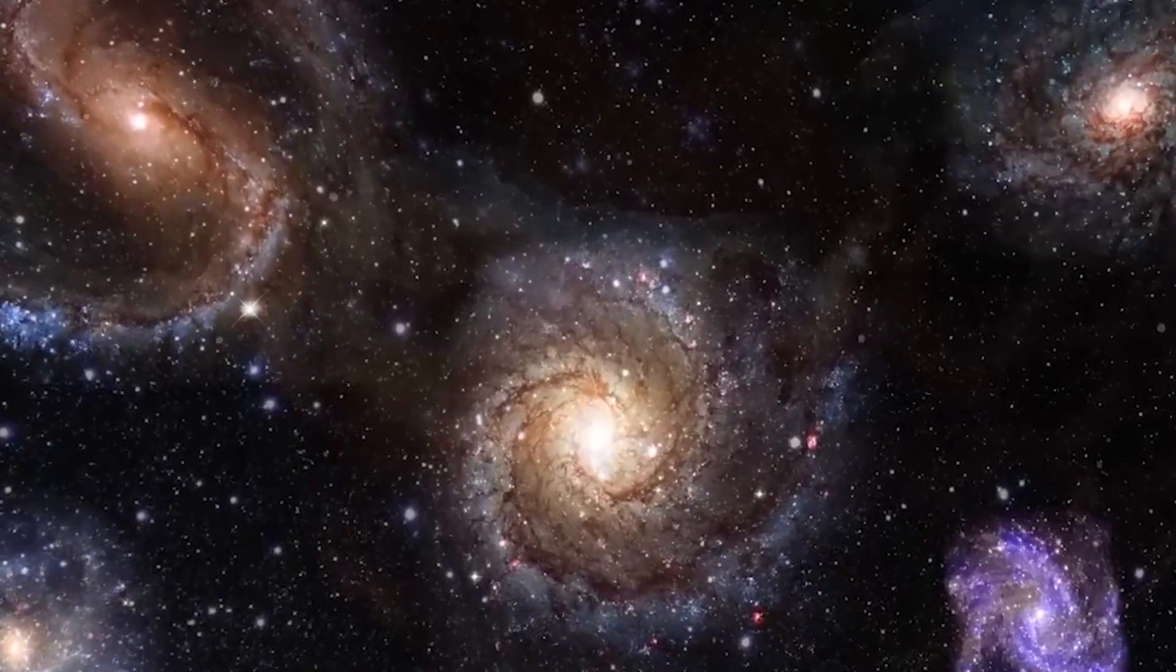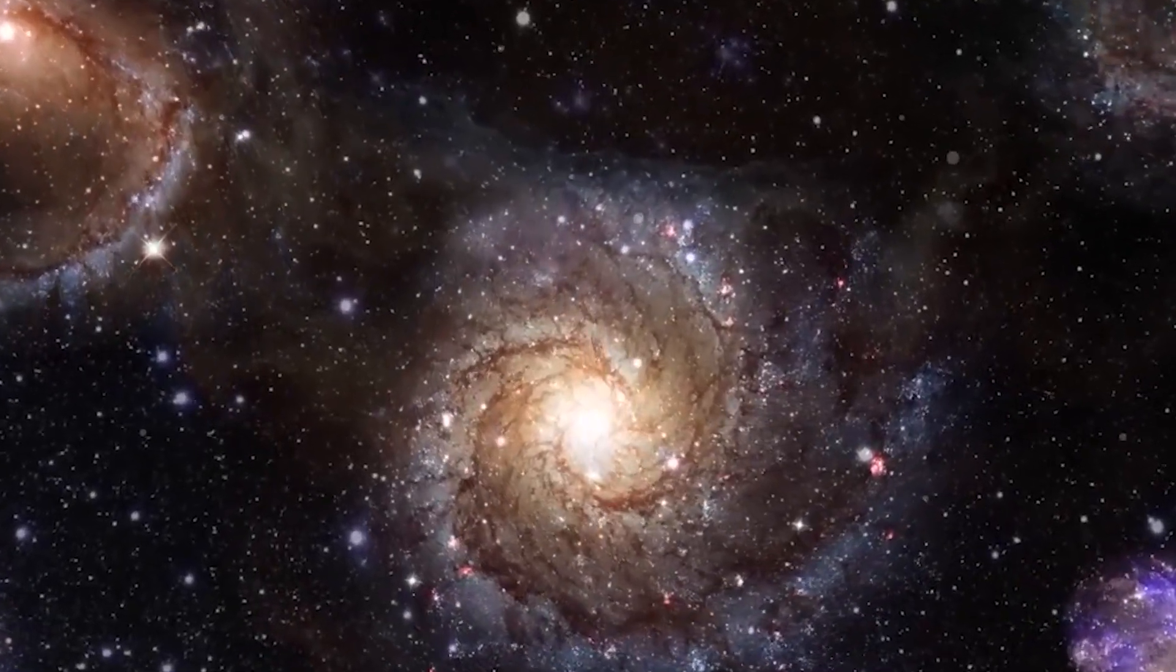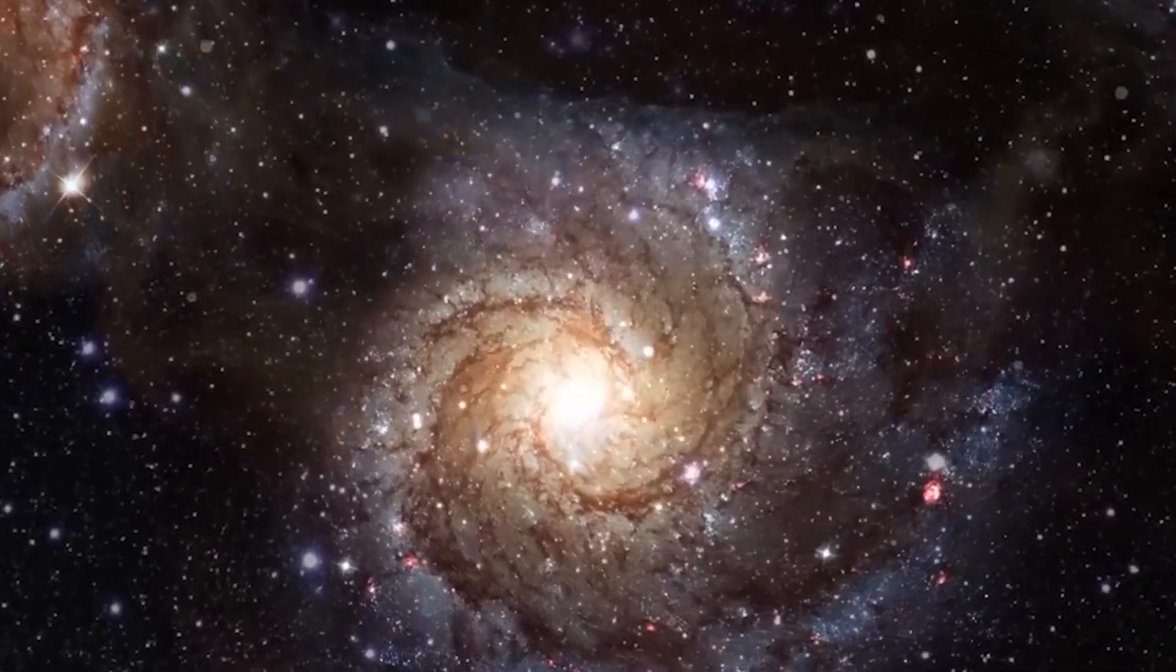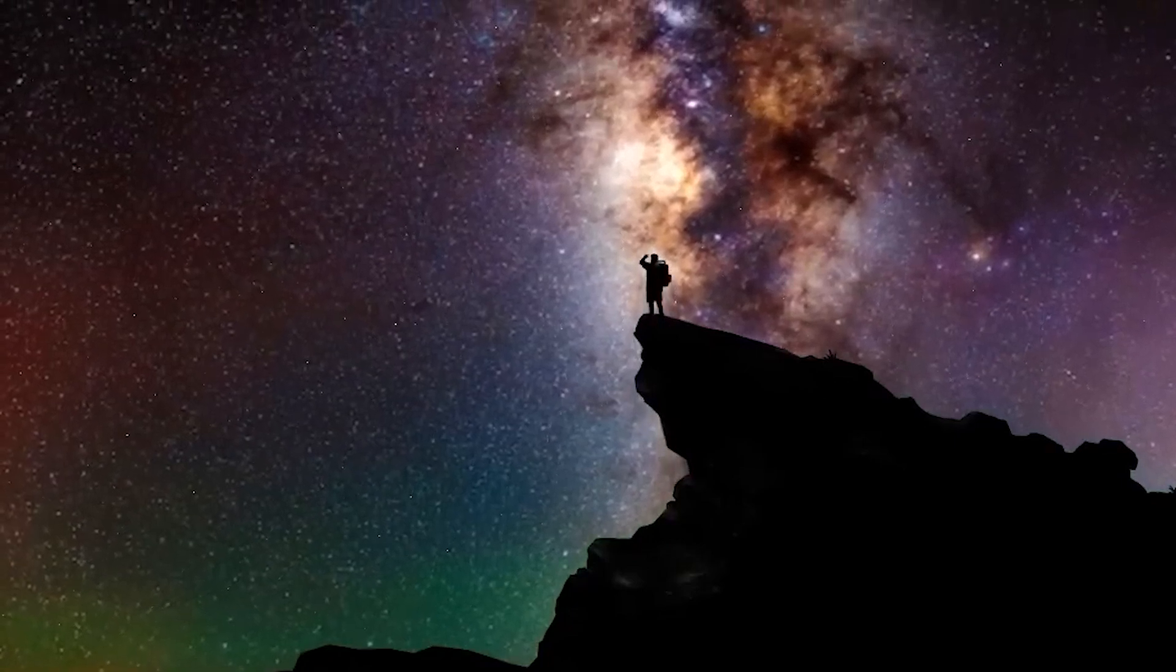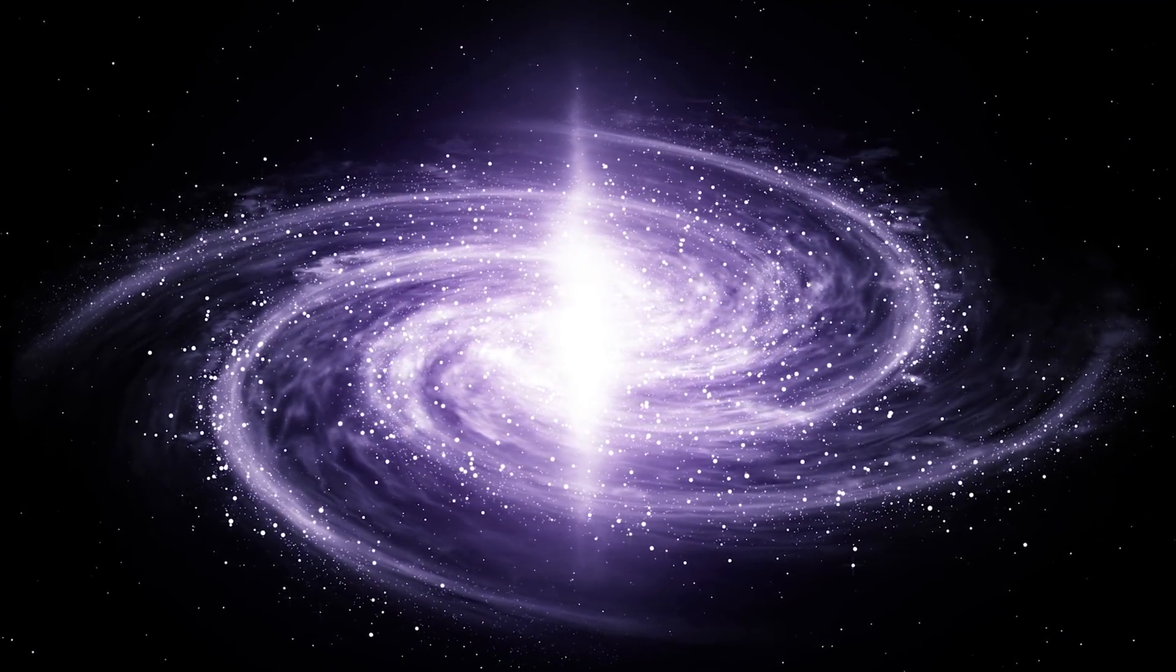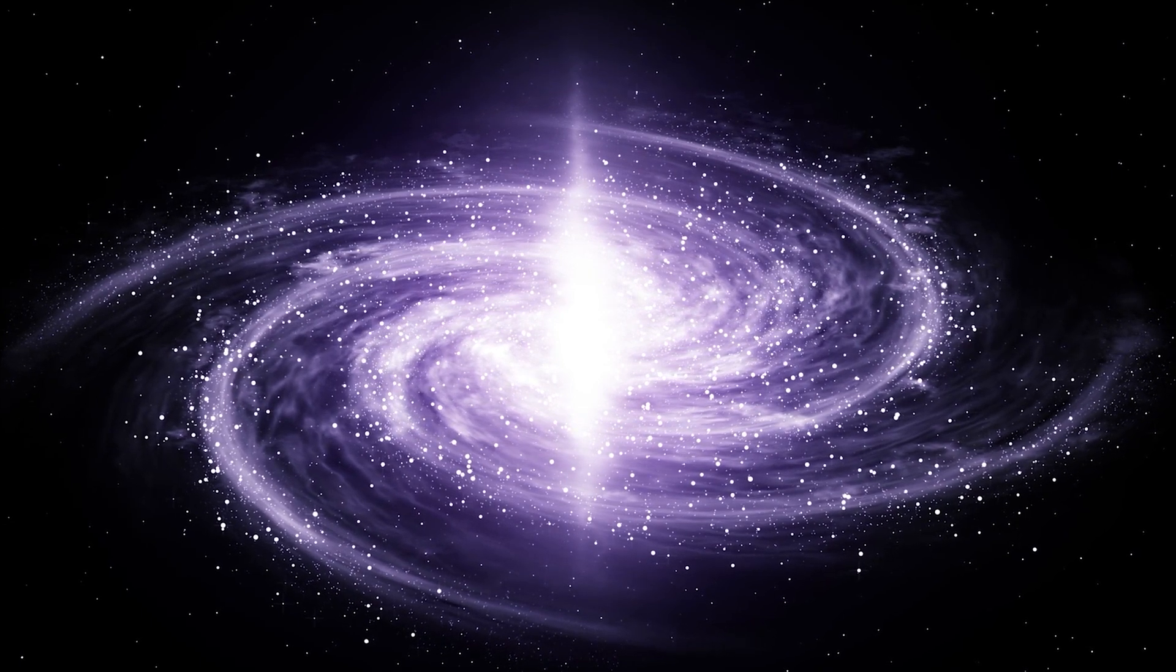Sometimes, smaller galaxies merge to form bigger ones. So, in a hundred million years, we might see fewer small galaxies because they've joined up to make larger ones. Also, the number of spiral and round-shaped galaxies might increase a bit.